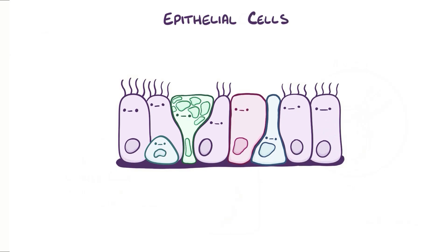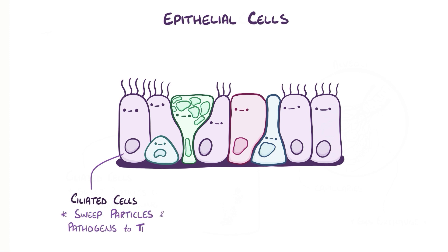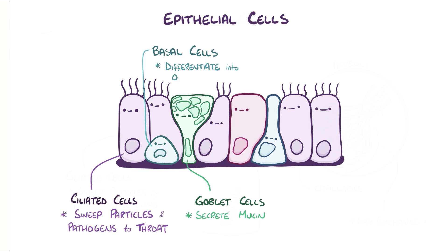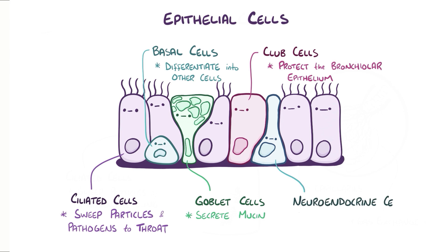Lining these airways are several types of epithelial cells which serve multiple functions. These include ciliated cells that have hair-like projections called cilia that work to sweep foreign particles and pathogens back to the throat to be swallowed. Another type, called goblet cells — named because they look like goblets — secrete mucin to moisten the airways and trap foreign pathogens. There are also basal cells that can differentiate into other cells in the epithelium, club cells that protect the bronchiolar epithelium, and neuroendocrine cells that secrete hormones into the blood in response to neuronal signals.